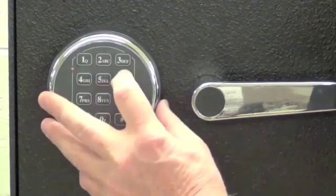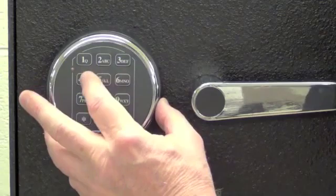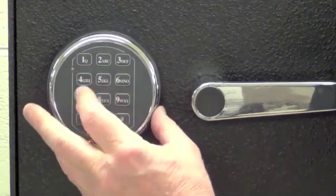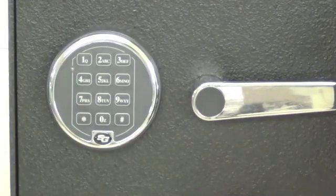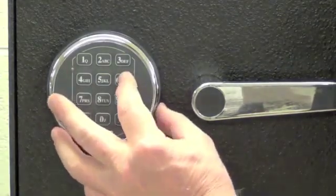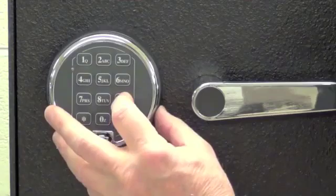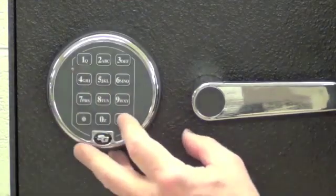Now we'll put in that same new code again in order to verify our new code. Now we've changed to a new code of 6, 5, 4, 9, 8, 7, followed by pound.